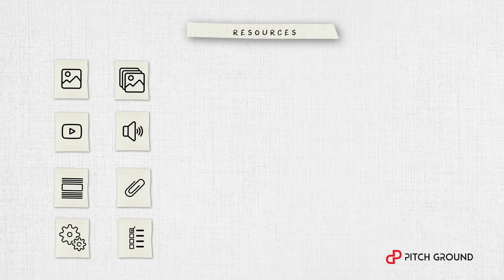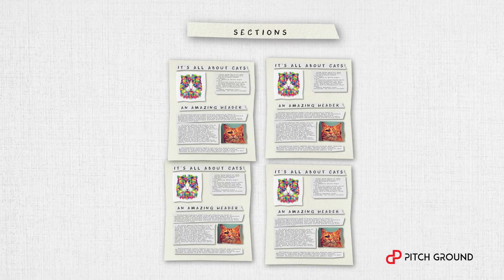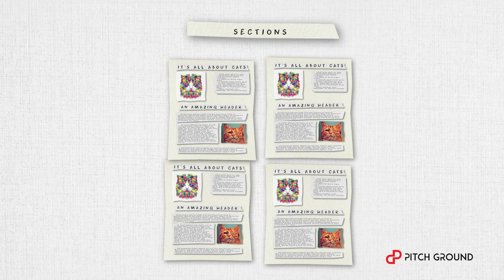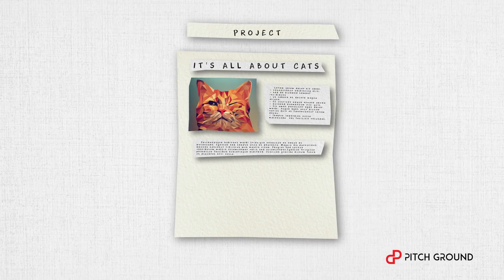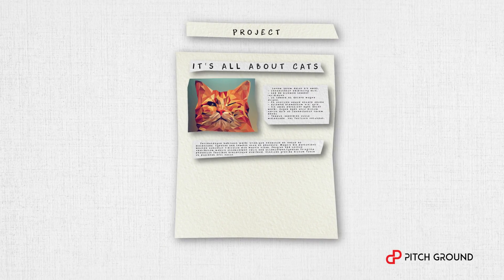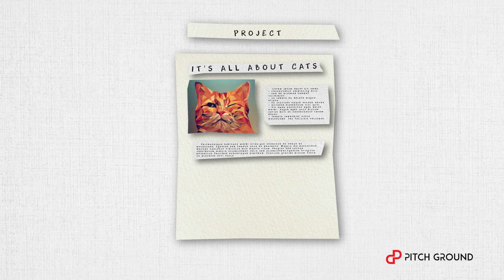Once you have it, you create sections — it's like chapters of a book. After you're done, you then assemble your sections into a project, just like chapters merged into a book. Or you can go vice versa: create a project, then sections, and then fill it up with resources.